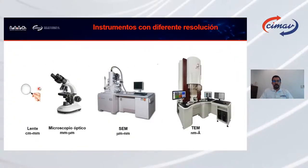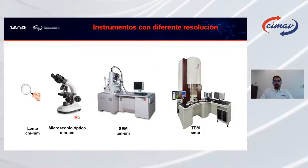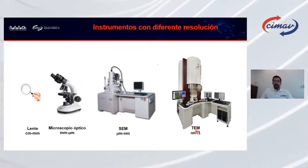Para ver a esas escalas tenemos distintas herramientas: la lupa amplifica una imagen; el microscopio óptico nos permite ver de centímetros a milímetros; si queremos ver más pequeño usamos el microscopio electrónico de barrido, que ve desde micras hasta nanos. Pero si queremos ir más allá, necesitamos el microscopio electrónico de transmisión de alta resolución, especializado en nanos y en ángstroms.